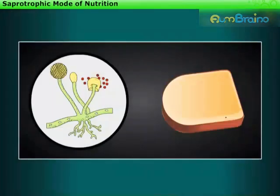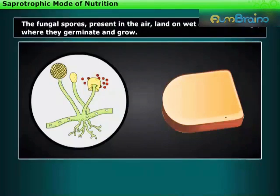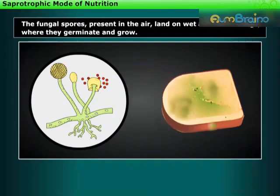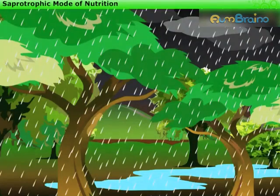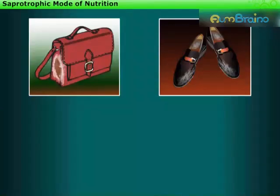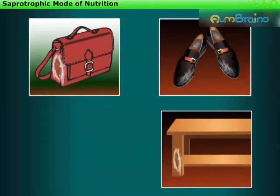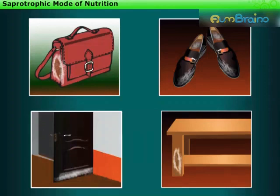Now let us see how fungi grow. The fungal spores present in the air land on wet and warm things, where they germinate and grow. During rainy season, they spoil many articles in our homes, for example, leather goods, wooden furniture, doors, etc.